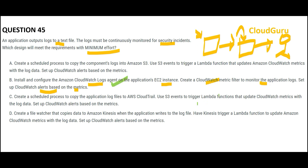This is a ready-made solution from AWS itself. Option D tries to create a custom solution using Kinesis, Lambda, and so on — do not reinvent the wheel if the wheel has already been created, so D is wrong. Option A is also a custom solution: put logs in S3, use S3 events to trigger a Lambda function, then update CloudWatch metrics — not required.